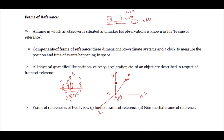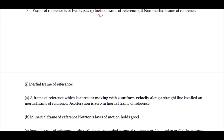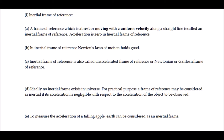This frame of reference is of two types: inertial frame of reference and non-inertial frame of reference. A frame of reference which is at rest or moving with uniform velocity along a straight line is called an inertial frame of reference. Acceleration is zero in the inertial frame of reference, meaning the frame is at rest or moving with uniform velocity.